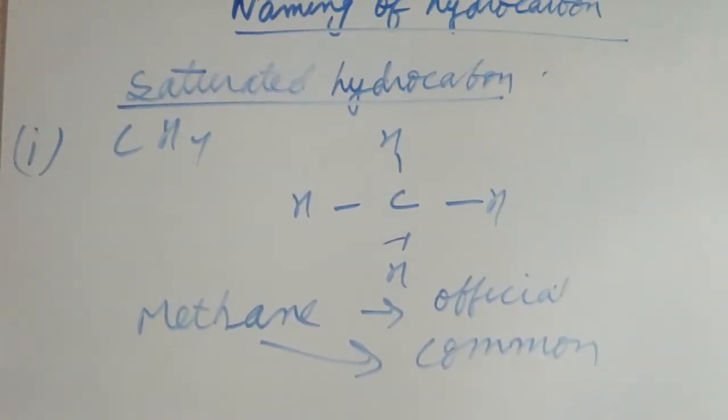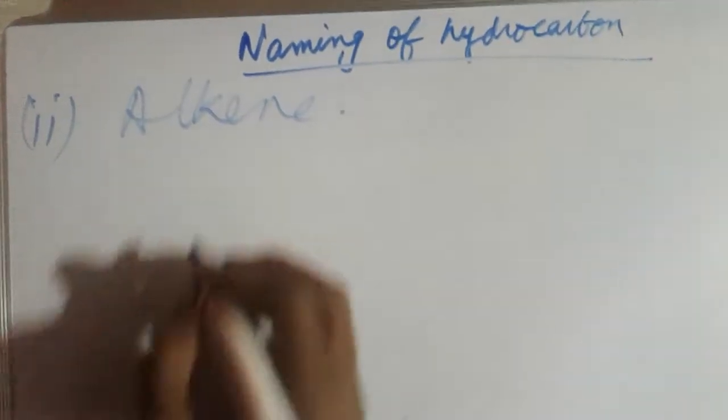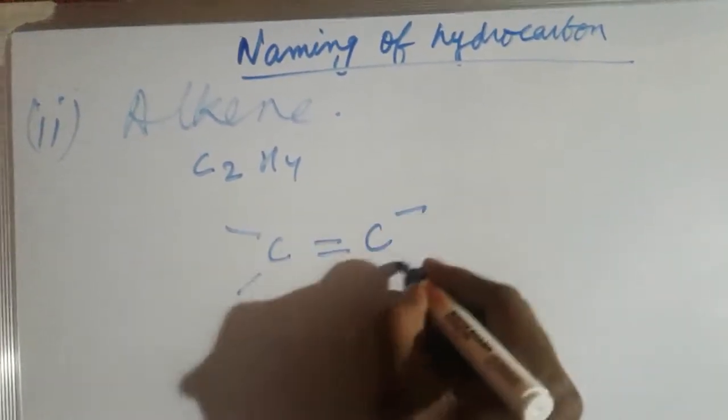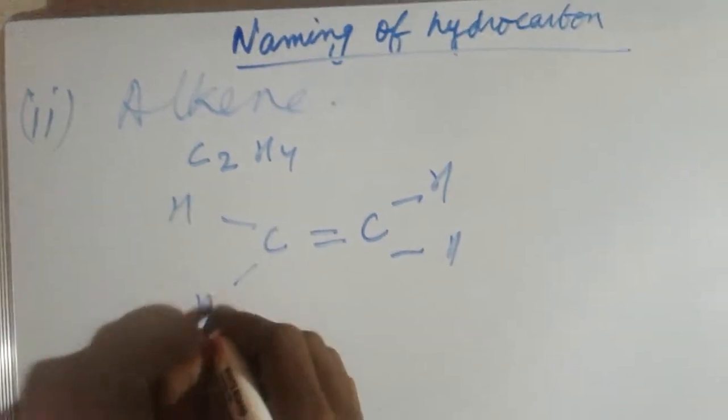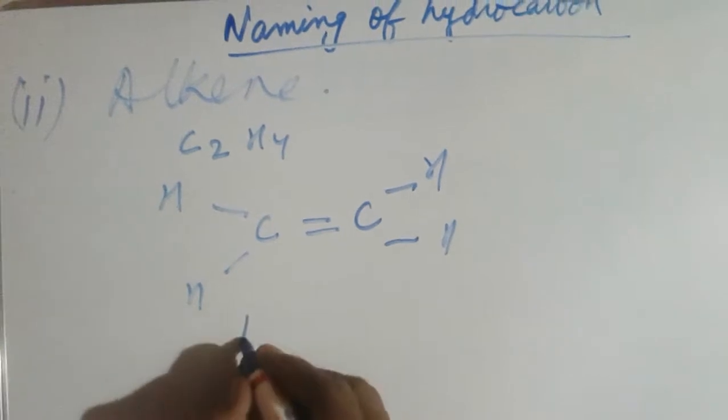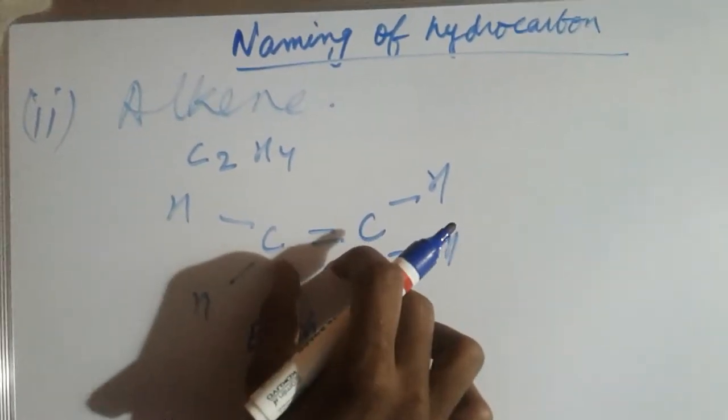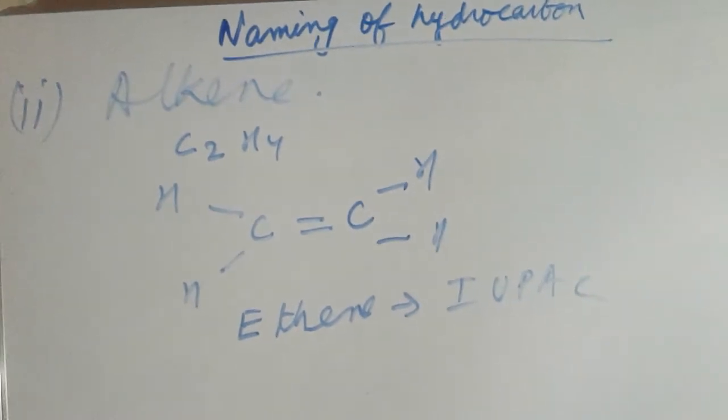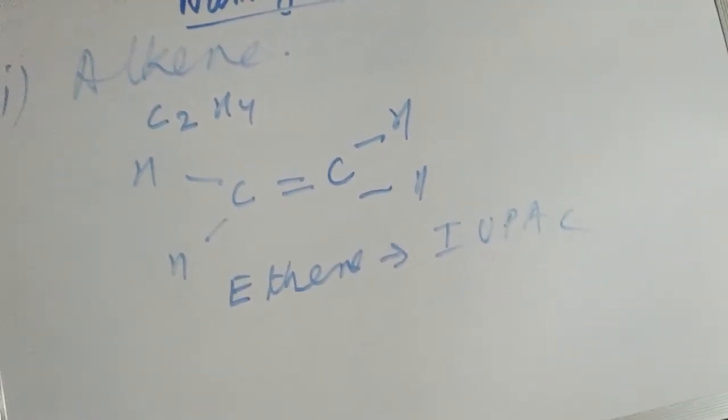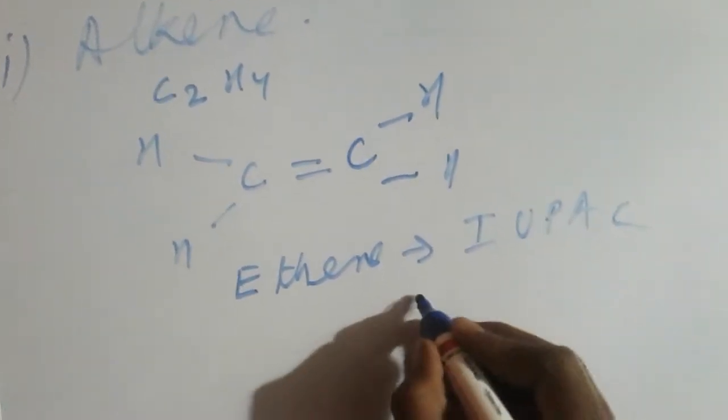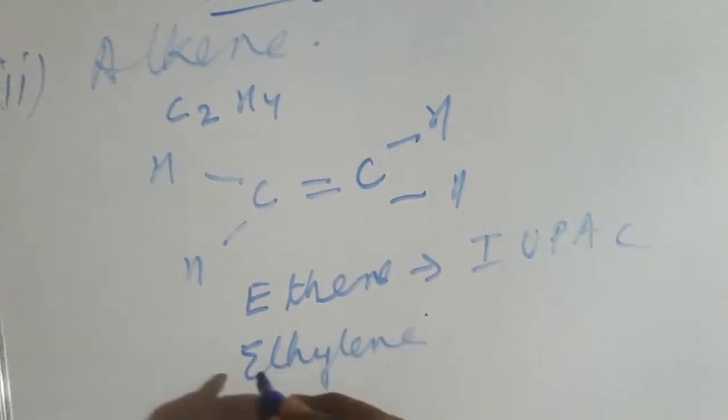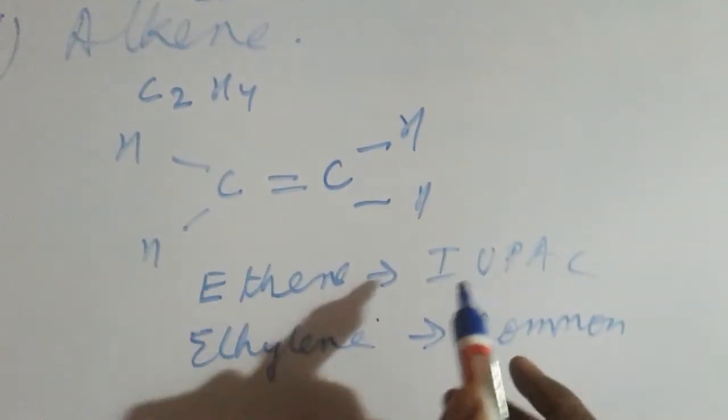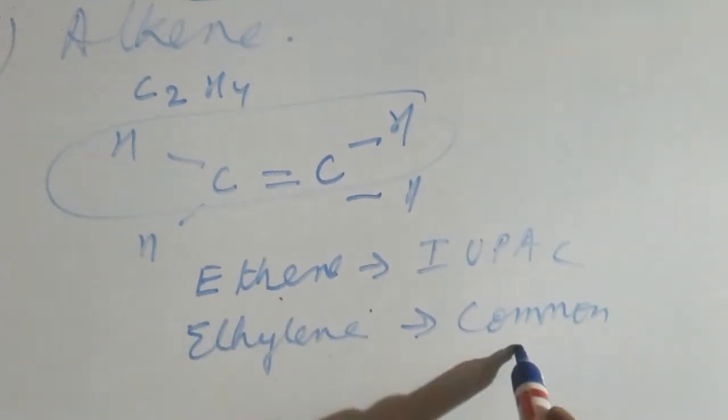Now we'll look at an alkene example. The first alkene is C2H4, which contains a double bond. It has two carbon atoms, so the prefix is 'eth,' and the double bond gives the suffix '-ene.' The IUPAC name is ethene, but the common name is ethylene.